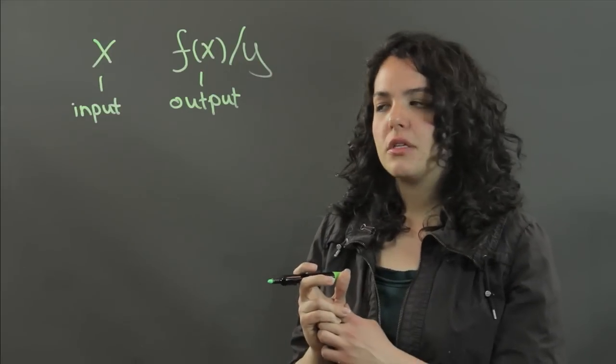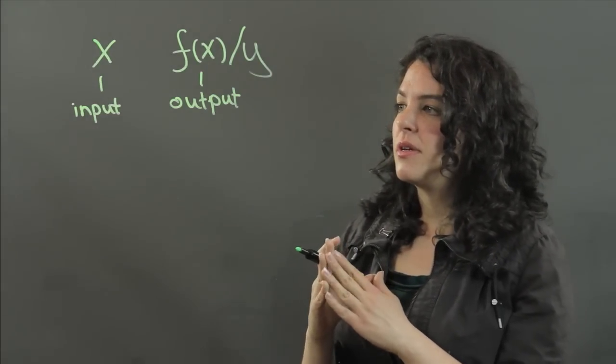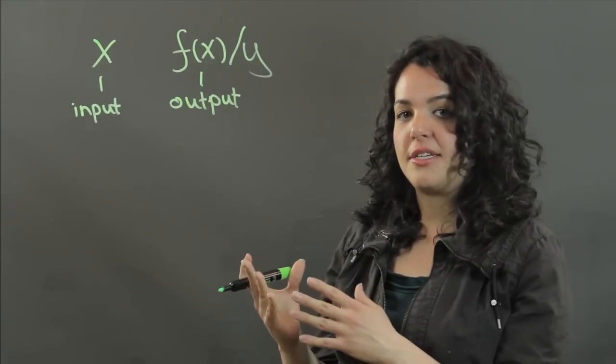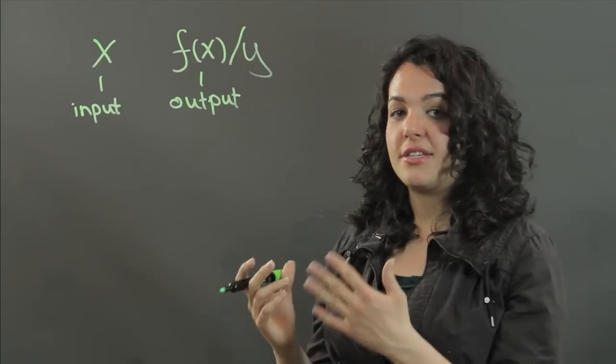So what we've come up with is a test called the vertical line test that helps us figure out if a graph that we're looking at is a function.